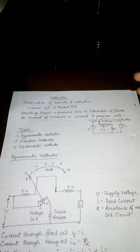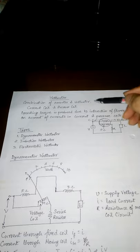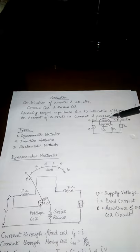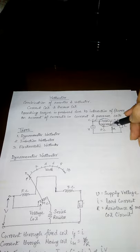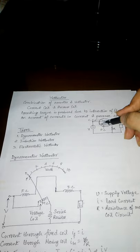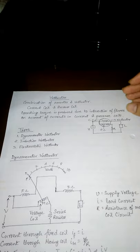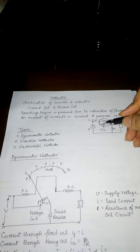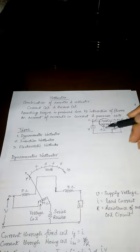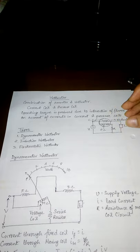The Wattmeter is actually the combination of ammeter and voltmeter. The current coil carries the load current entirely, while the current flowing through the pressure coil or potential coil is proportional and in phase to the voltage. From the power definition, P = V × I, meaning the product of voltage and current.